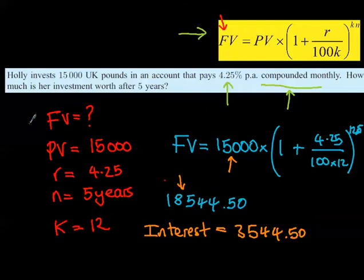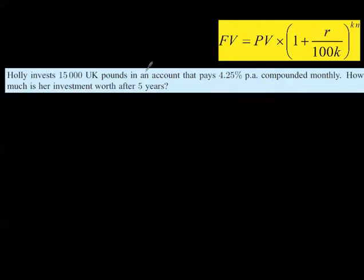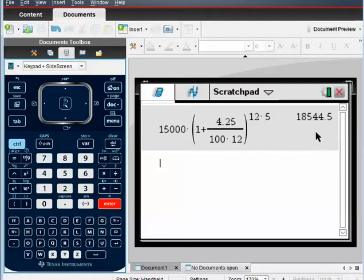But I'm going to show you now how to do all of this on the calculator really, really quickly using the financial solver. So we're going to answer the same question. I'm going to get the same answer, 18,544, but we're going to use the feature on the financial solver on the calculator. Now, here's how you get to it.